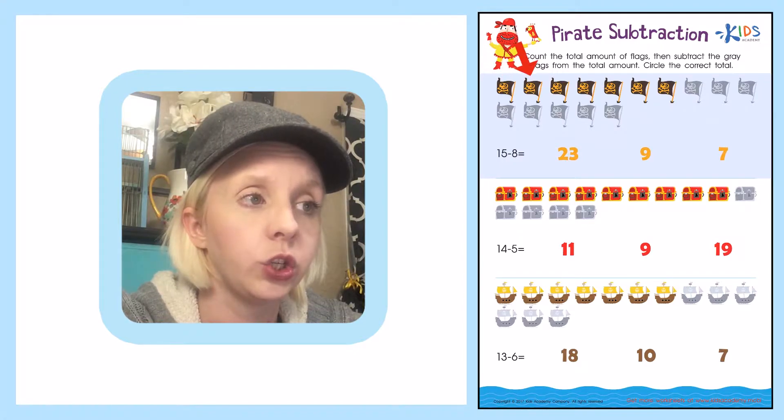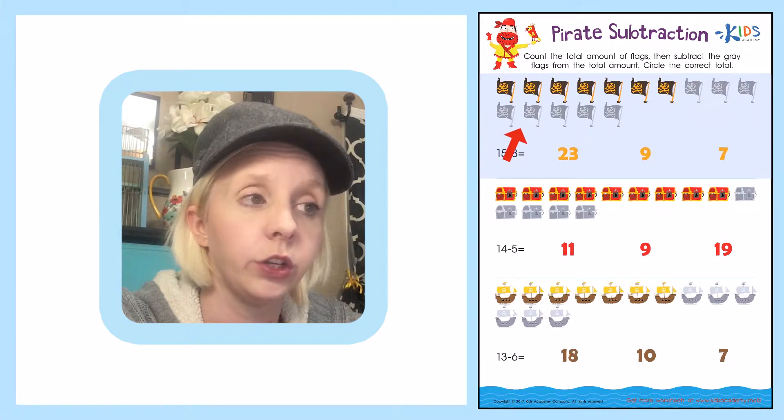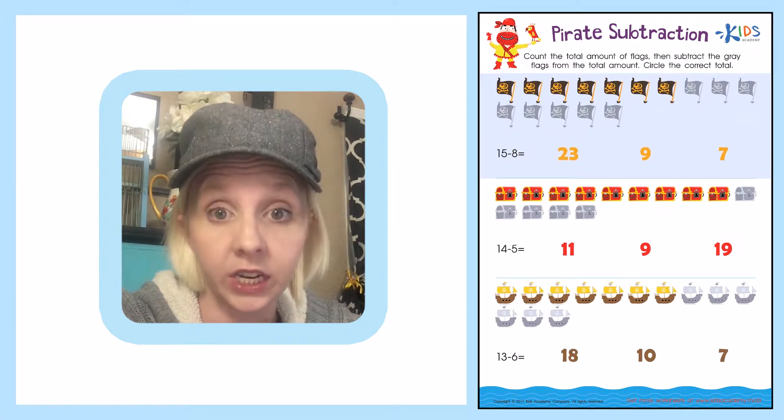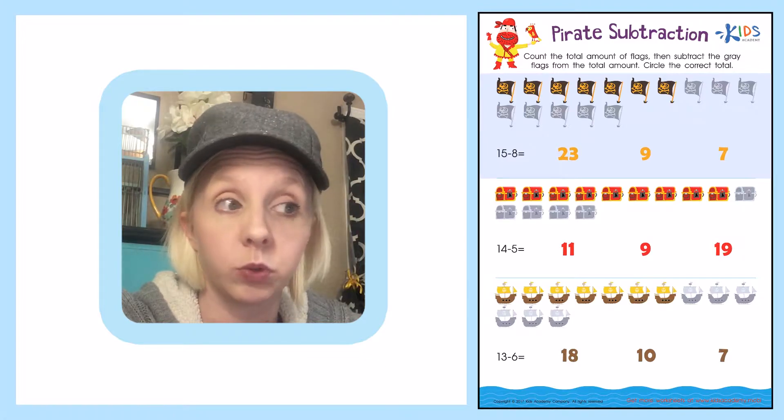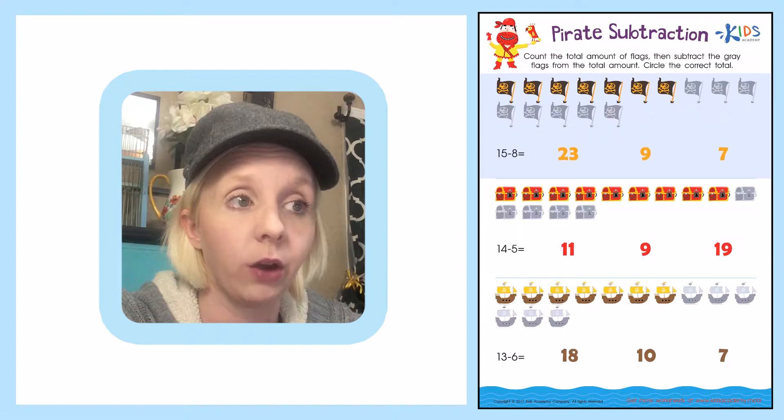We've got 1, 2, 3, 4, 5, 6, 7, 8, 9, 10, 11, 12, 13, 14, 15. So we have 15 total flags. We need to subtract 8. And it looks like that's already written out for us. Let's count 8.